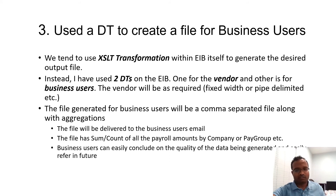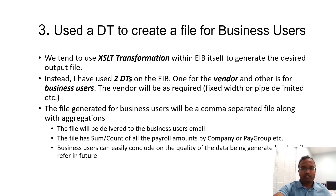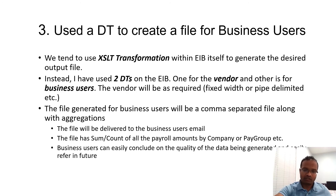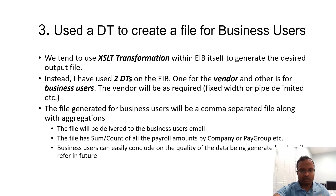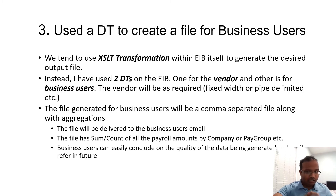The third concept is document transformation. Most of us use XSLT transformation on the EIB itself, but there is additional value in using document transformation. Giving the vendor file directly to business users isn't very useful — it's a text file, comma-separated, pipe-delimited, or space-delimited, and not easy to understand. Data in an Excel sheet is far more helpful for business users.